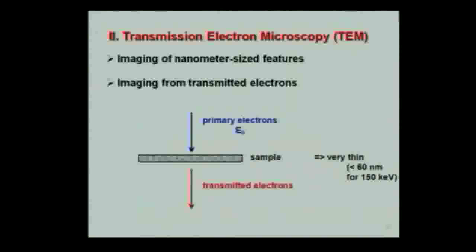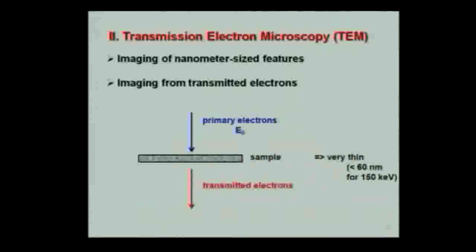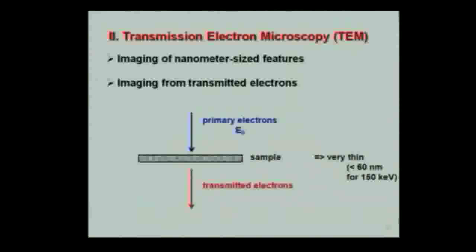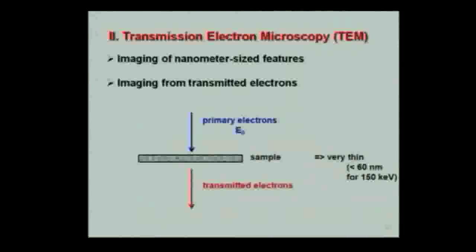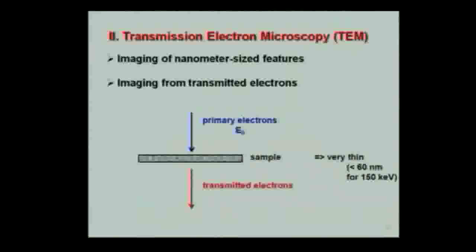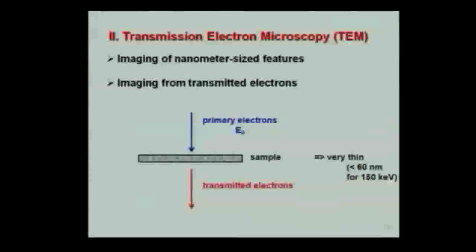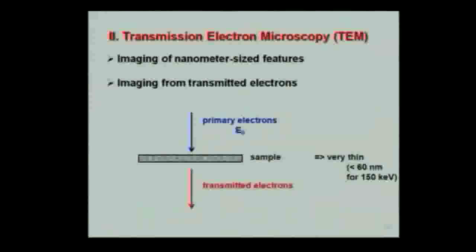In TEM, primary electrons pass through a very thin sample and you analyze the transmitted electrons, so there are no interaction volume problems. You can therefore do EDS analysis on very small details. The problem with TEM is that you observe only a very small region — the observed zone is only a few nanometers squared — and you must ask whether what you observe is really representative of your sample. For TEM with an acceleration voltage of 150 keV, you need a sample thinner than 60 nanometers, which makes sample preparation the main challenge, especially for inorganic samples.